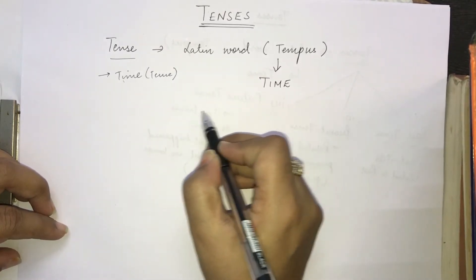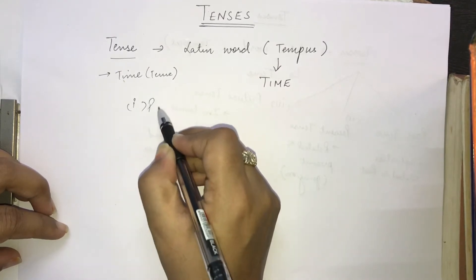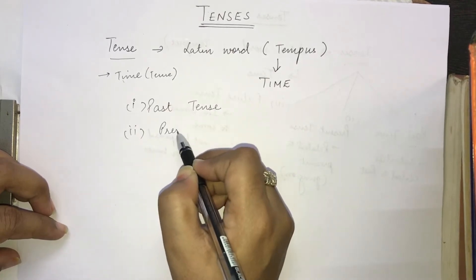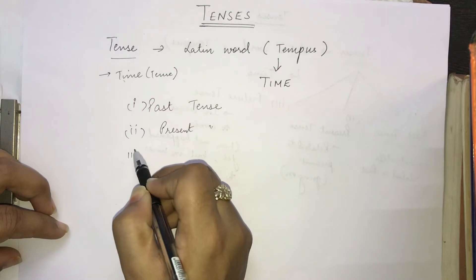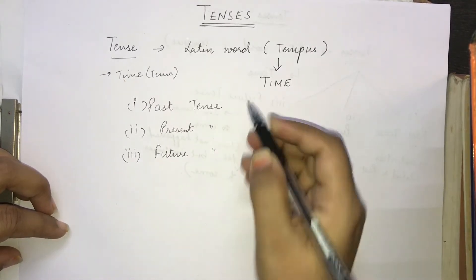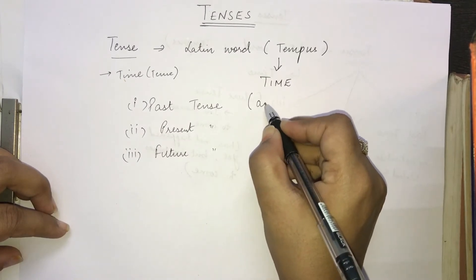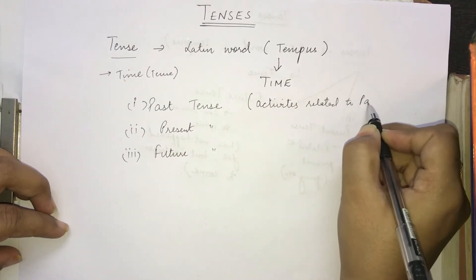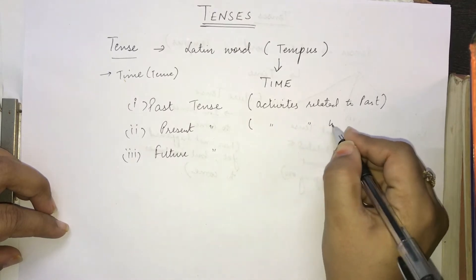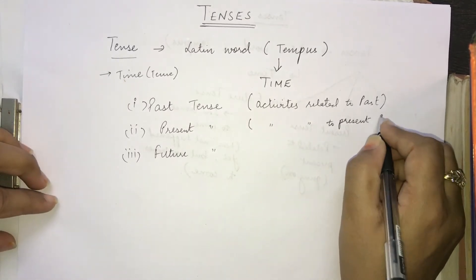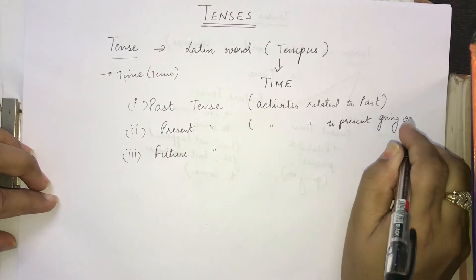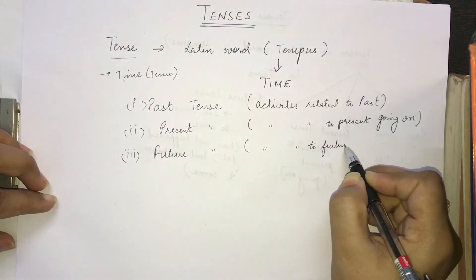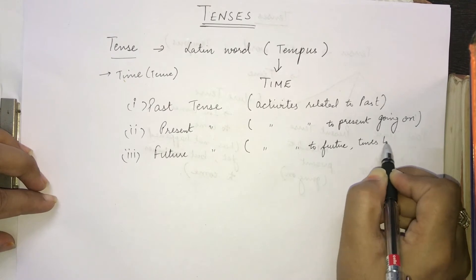Now what are the different categories? We have three different categories. The very first one is past tense, the second one is present tense, and the third one is future tense. Past tense deals with activities related to the past. Present tense deals with activities that are currently going on. And future tense deals with activities related to times to come.